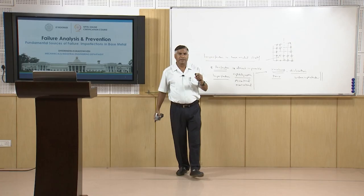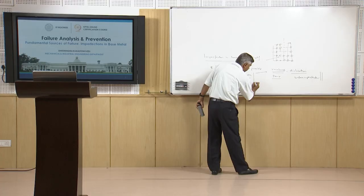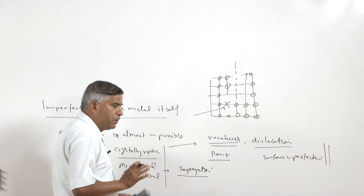Looking at the diagram, the various point defects or vacancies include: a vacancy where one atom is missing from the regular arrangement; an interstitial impurity where a foreign atom is accommodated between the regular atoms; and a substitutional impurity where a foreign atom replaces an atom in the regular crystalline arrangement. There is also a Frenkel defect where a disordered arrangement of atoms exists. At the micro level, defects include localized presence or absence of certain elements, termed segregation.